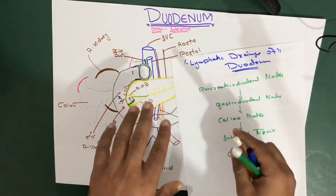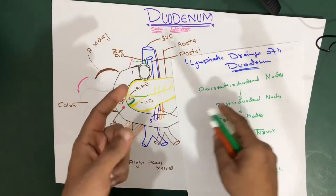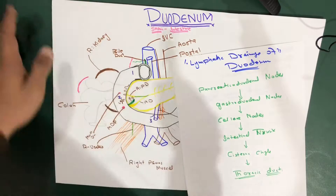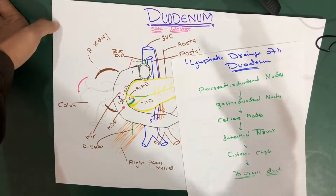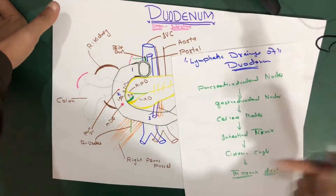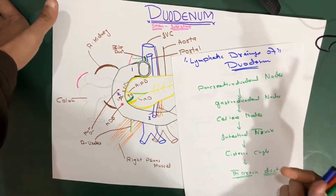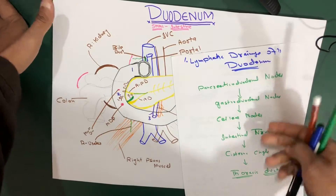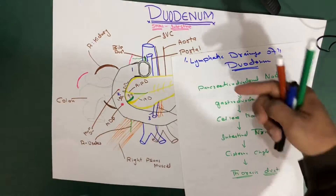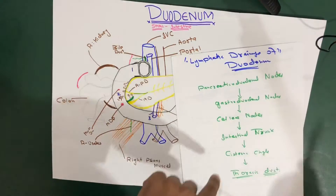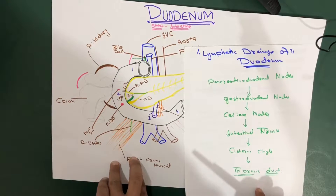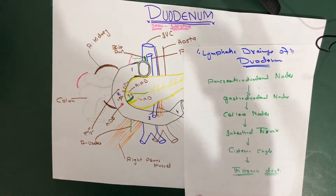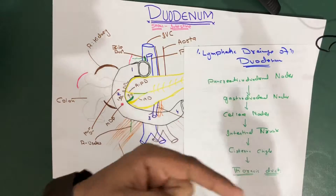So to summarize the lymphatic drainage of the duodenum: it drains into the pancreaticoduodenal nodes, then the gastroduodenal nodes, then the celiac nodes, then the intestinal trunk, then the cisterna chyli, and finally ends up in the thoracic duct. Very simple. We're done with the lymphatic drainage and the arterial supply.